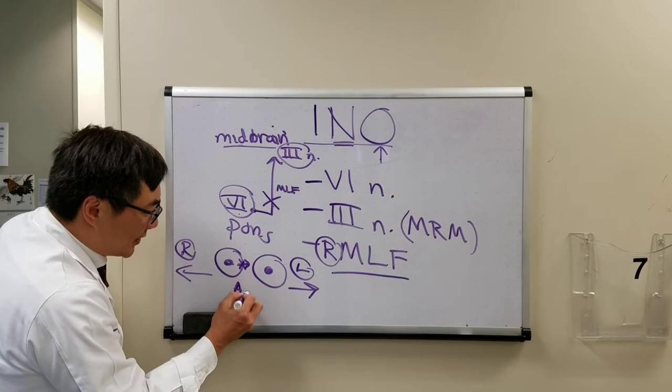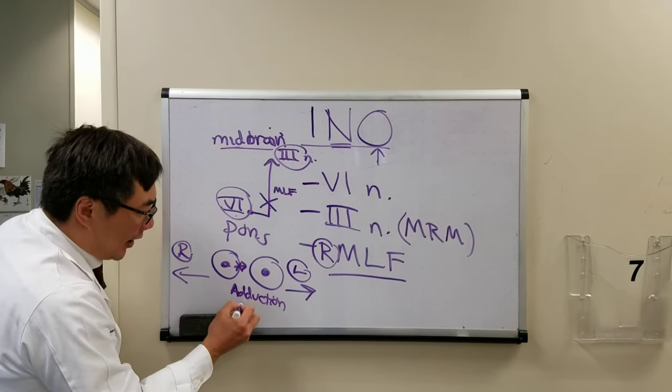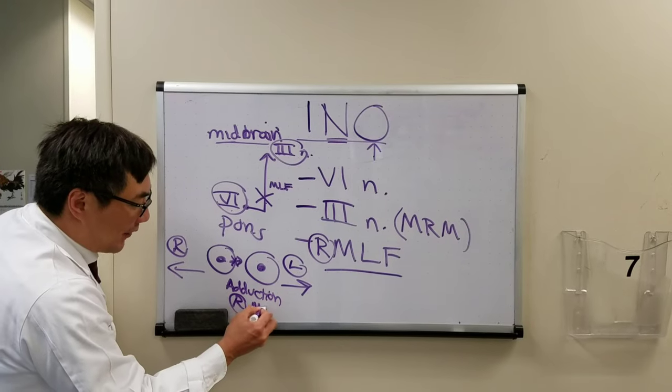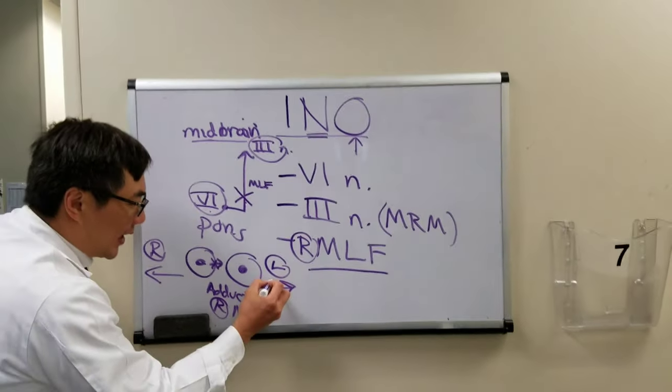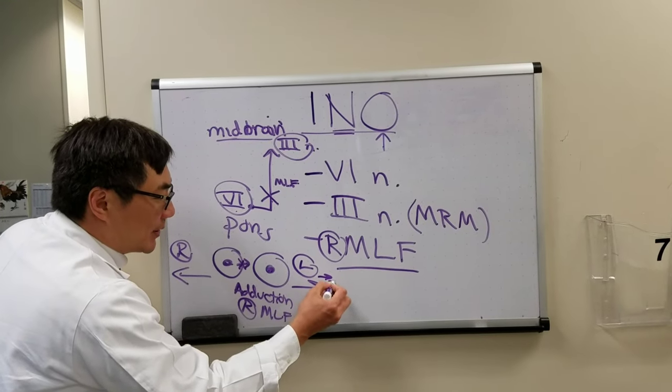The adduction will be decreased on the side of the MLF lesion, and that is going to cause the abducting eye, the left eye, to get nystagmus.